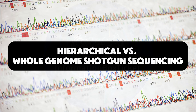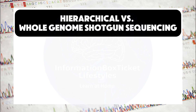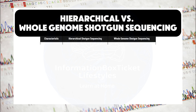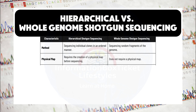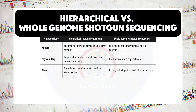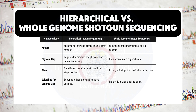When comparing hierarchical shotgun sequencing and whole-genome shotgun sequencing, there are several key differences. In terms of method, hierarchical shotgun sequencing involves sequencing individual clones in an ordered manner, while whole-genome shotgun sequencing involves sequencing random fragments of the genome. Hierarchical shotgun sequencing requires the creation of a physical map before sequencing can begin, whereas whole-genome shotgun sequencing does not. Hierarchical shotgun sequencing is more time-consuming due to the multiple steps involved, while whole-genome shotgun sequencing is faster as it skips the physical mapping step. Hierarchical shotgun sequencing is better suited for large and complex genomes, while whole-genome shotgun sequencing is more efficient for smaller genomes.